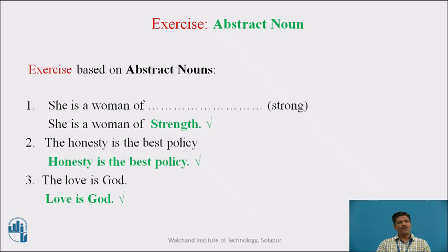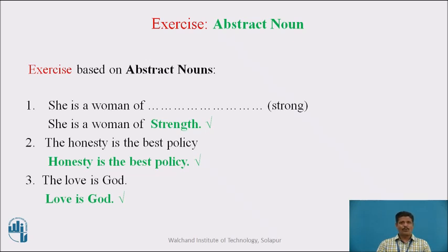Second: 'The Honesty is the Best Policy' — Honesty. In this sentence there is an error: the use of the Definite Article 'The.' Normally, we do not use the Definite Article 'The' with Abstract Nouns like Honesty. The right sentence is: Honesty is the Best Policy.